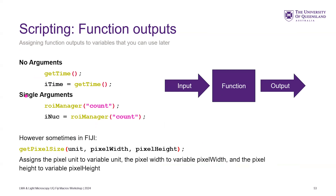Just a reminder: we've got things like get time with no argument, single argument things. This can be used in a for loop, or you can also just define a variable and have your for loop refer to that — it can help with debugging. Sometimes if you run multiple of these functions, we've encountered getDimensions before or getVoxelSize. What this does is you've got this unit, pixel width, pixel height — these are like collections of variables that it will populate with whatever the image has.